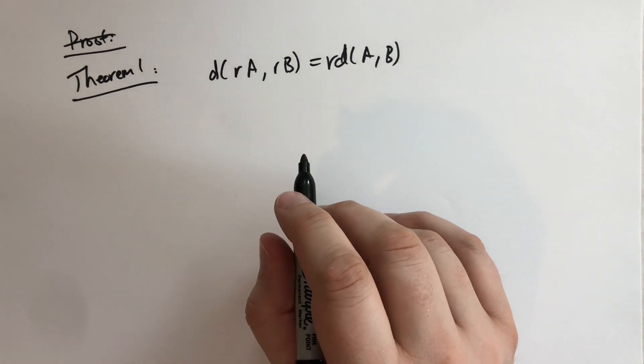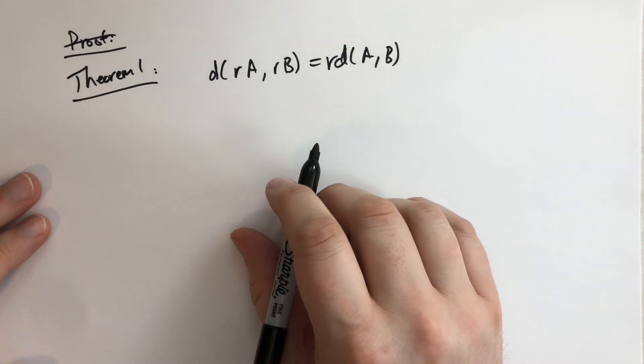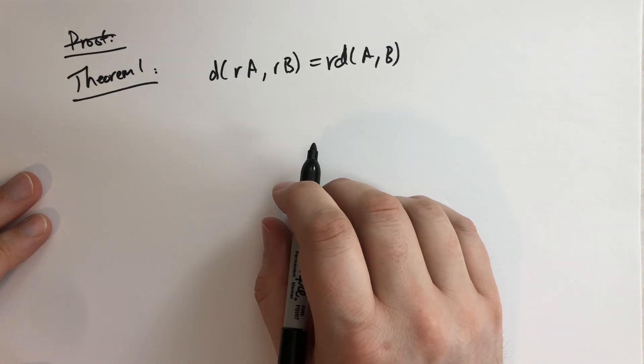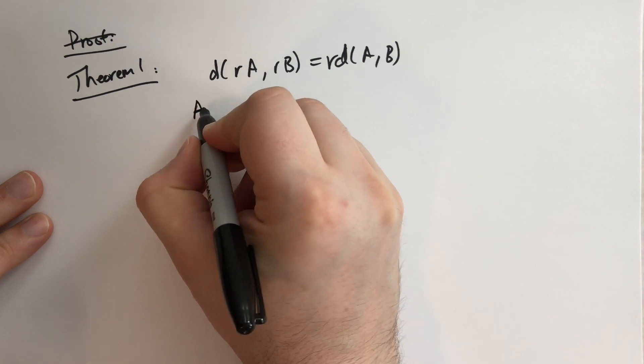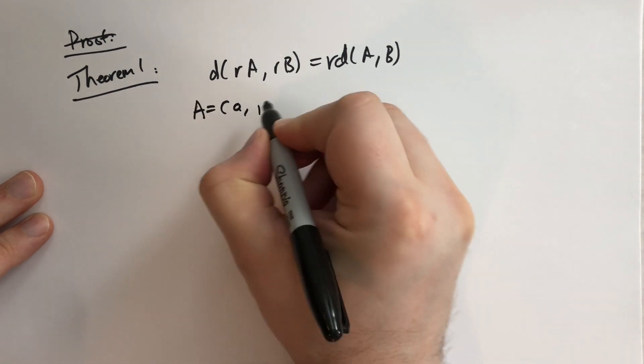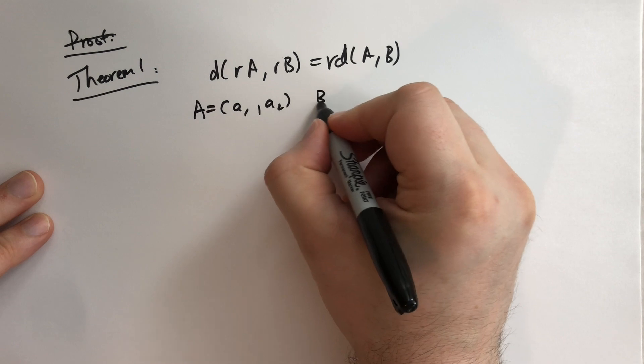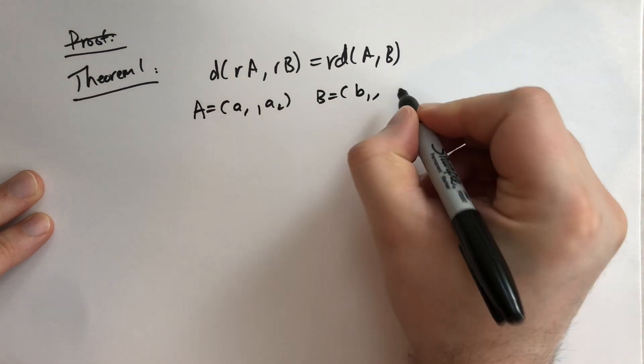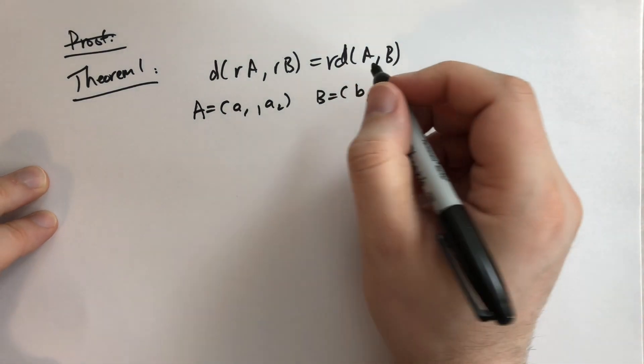If you went to the previous chapter section 8, chapter 8, there was a problem that actually allowed you to prove this. We're going to show you how simple that proof is supposed to be. So we say A is equal to A1 comma A2. I'm getting my commas mixed up. B is equal to B1 comma B2.